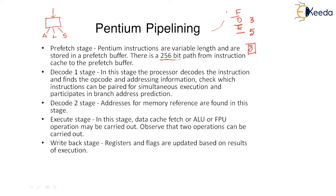Next is Decode Stage 1. In this stage, the processor decodes the instruction and finds the opcode and addressing information, checks which instructions can be paired for simultaneous execution, and participates in branch address prediction. In Decode Stage 1, the opcode will get decoded. As we decode the opcode, we will also be able to know if the current instruction is a branch instruction. If it is, we need to evaluate the condition to find out if we are going to take this branch or not.